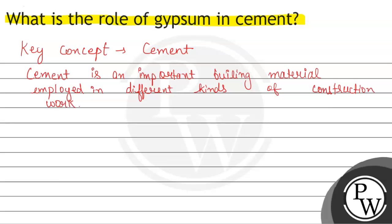In this particular question, we have been asked what is the role of gypsum in cement. Gypsum has the chemical formula calcium sulfate, CaSO4·2H2O.